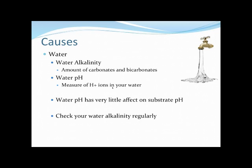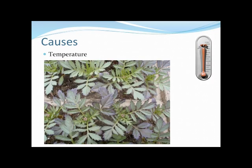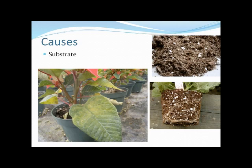Improper temperatures can mimic some nutrient deficiency symptoms. Here's a marigold crop growing very cold, and you see purpling on the lower leaves — one of those symptoms most of us associate with phosphorus deficiency. In fact, if you took a tissue sample, it would show phosphorus deficiency. But it probably isn't because there's no phosphorus in the substrate — it's because the greenhouse temperatures are too low.